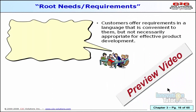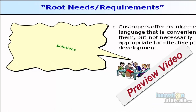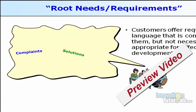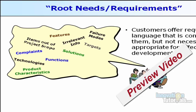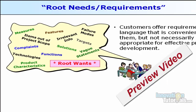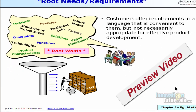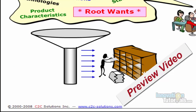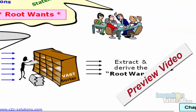One last piece of advice about developing customer needs: one of the goals you have is to get to a root need. When you talk to customers, they'll give you all kinds of things — solutions, complaints, features, performance goals, targets, technologies, functions, failure modes, product characteristics, irrelevant information, items outside scope, metrics, vague statements, and occasionally a root want, which is really what we want. We need to understand the fundamental need the customer has, so we sift through all the verbatims from the customer and extract what we call root wants. These are the things that go into our House of Quality.